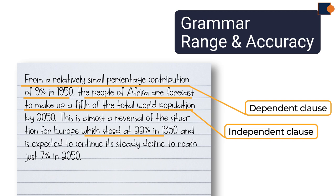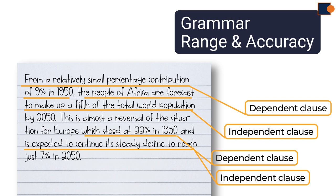In the next sentence, which stood at 22% in 1950 is dependent clause, and is expected to continue its steady decline is an independent clause. So, both ideas are given in a complex sentence with different style and range.